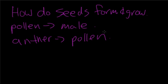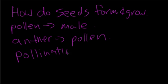Female sex cells — the eggs — are in a part of a plant known as the pistil. The transfer of pollen grains to the pistil is called pollination. Pollination can take place when pollen is carried from a flower's anther to its own pistil or another flower's pistil.